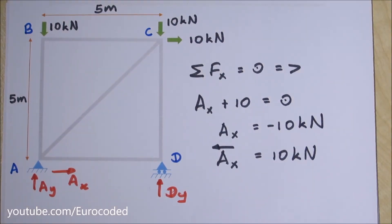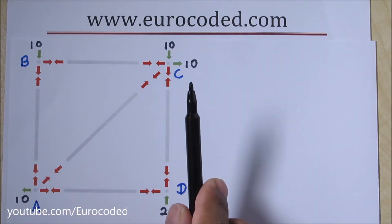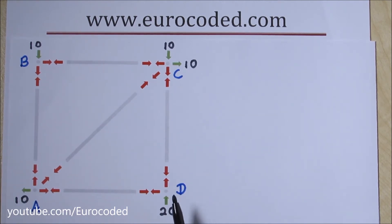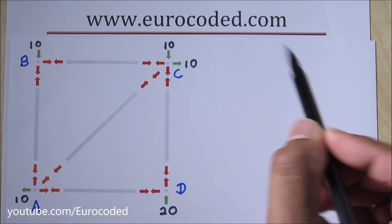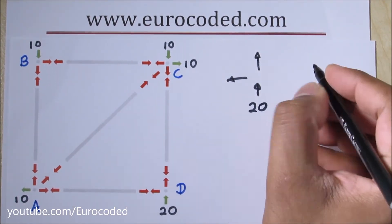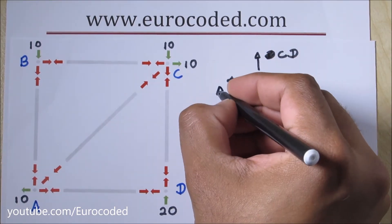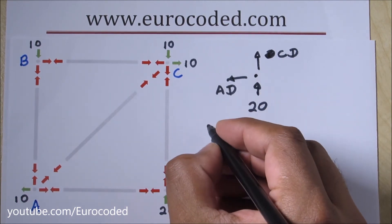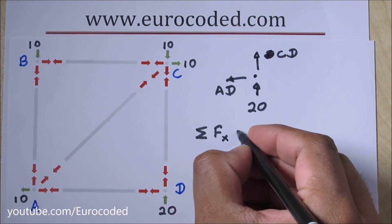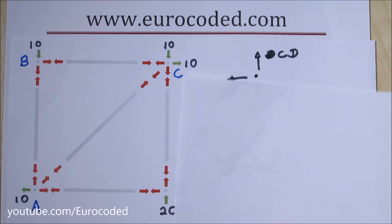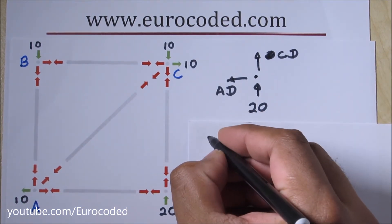Now we are going to look at internal forces of this truss. I've already marked the external forces and reactions, with AX marked in the correct direction. To begin with, let's pick joint D. If we isolate this joint and look at its horizontal equilibrium, we can write AD is equal to zero.